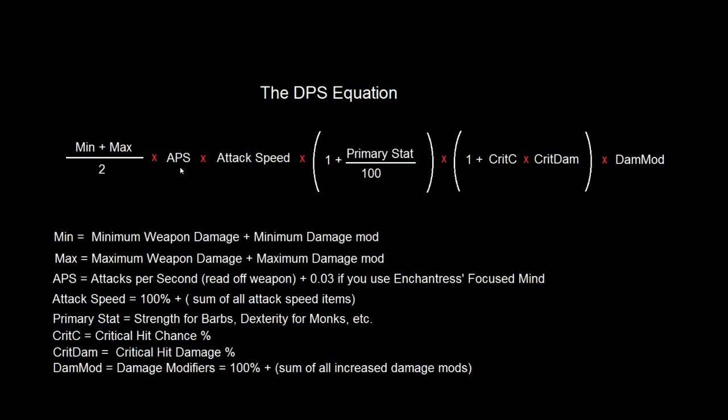Then you're going to multiply that by your attacks per second, which is a number that you can read off of your weapon. It's going to be like 1.2, 1.3 attacks per second, whatever it is. But you got to remember to add 0.03 if you use the Enchantress's ability Focused Mind. That is a bit deceptive because the ability on the Enchantress actually says they gain 3% attack speed, but that is incorrect. I believe that is one of the sources of error that some websites and spreadsheets out there have because this is working differently than you'd expect from the description.